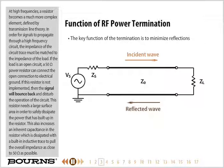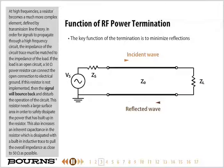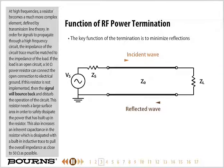At high frequencies, a resistor becomes a much more complex element, defined by transmission line theory. In order for signals to propagate through a high-frequency circuit, the impedance of the circuit trace must be matched to the impedance of the load. If the load is an open circuit, a 50-ohm power resistor can connect the open connection to electrical ground. If this resistor is not implemented, the signal will bounce back and disturb the operation of the circuit. This resistor needs a large surface area to safely dissipate the power built up in the resistor, which also increases an inherent capacitance that is offset with a built-in inductive trace to pull the overall impedance as close to 50 ohms as possible.